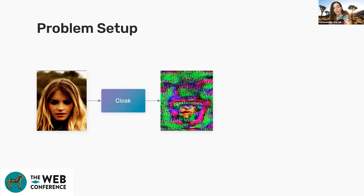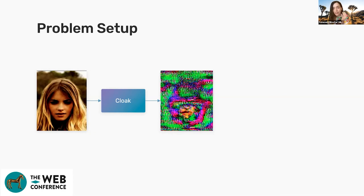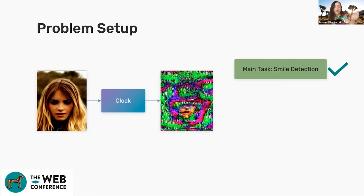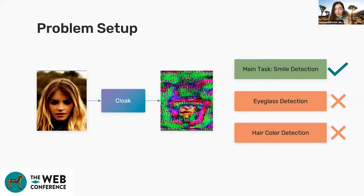What we're suggesting is a mechanism called Cloak. The intuition is: you have this deployed model that's supposed to do one task, so let's change our representation of the data so that this one task works correctly, but other tasks would not render accurate answers. For smile detection, if you pay attention, the smile section is not obfuscated, but the rest of the image is suppressed. When you give this to the model and it's supposed to do smile detection, it will succeed. But if it tries to guess if the person has eyeglasses or their hair color, it's not going to work.